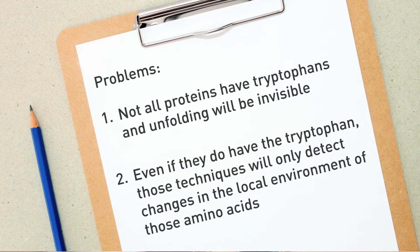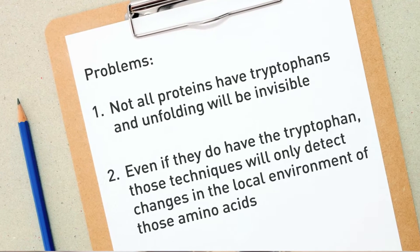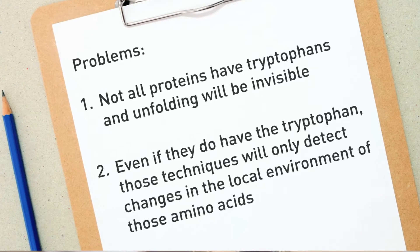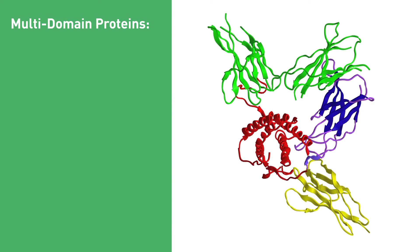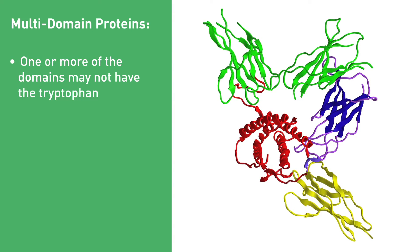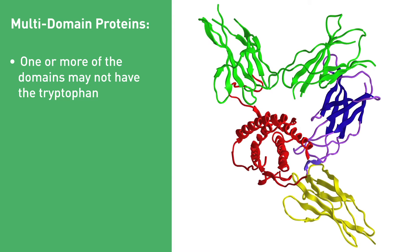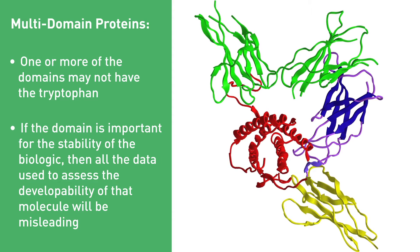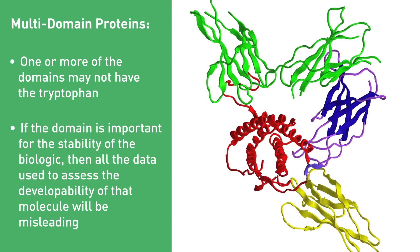Secondly, even if they do have the tryptophan, those techniques will only detect changes in the local environment of those amino acids. This may not be a good representation of the unfolding of the protein as a whole. This is particularly important for multi-domain proteins. One or more of the domains may not have the tryptophan and therefore the unfolding of a particular domain may go completely undetected. If this domain is important for the stability of the biologic, then all the data used to assess the developability of that molecule will be misleading.